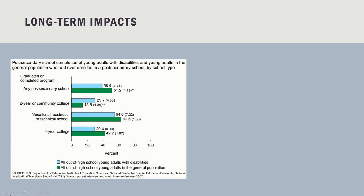However, one-third of students with disabilities do not have positive responses to how their school supports their needs. In fact, according to the Institute of Education Sciences, in 2011, six years after graduating from high school, students with special needs on average had only completed two years of college-level education, as opposed to four years for their general education counterparts. This same study found that students with special needs are more likely to enroll in a two-year vocational or technological program, and less than 30% of those who enrolled in a four-year degree program completed their college degree.